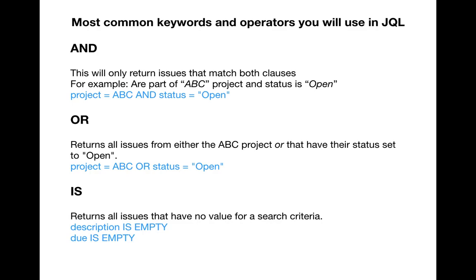The third keyword is IS. IS returns all issues that have no value for a search criteria. If you're looking for issues which don't have any value in a particular field, you can use the IS keyword. For example: project is equal to ABC AND description IS EMPTY — this lists all issues in project ABC for which the description is empty. You can also search for issues where the due date IS EMPTY.